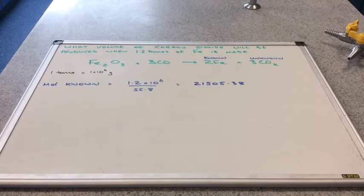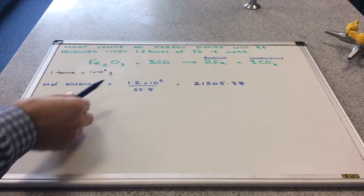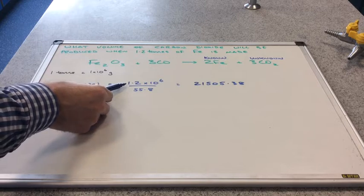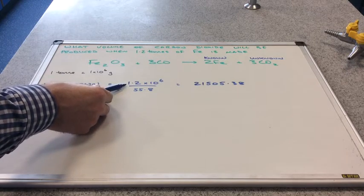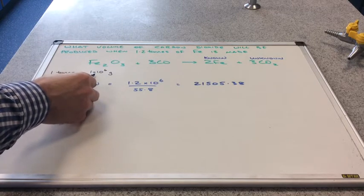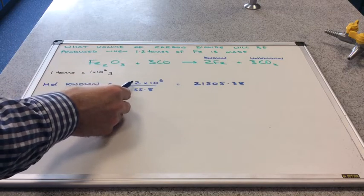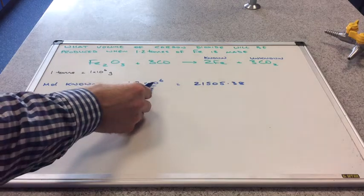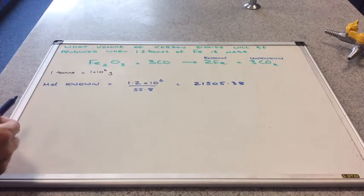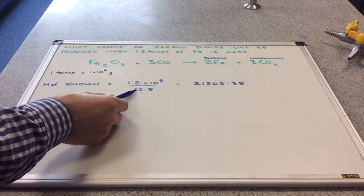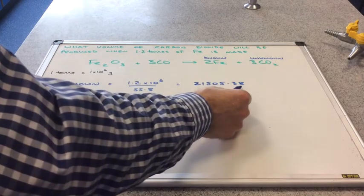So calculating the moles of known, the moles of iron. So we know that 1.2 tonnes have been produced. Remember that needs to be in grams. So we just bring in this conversion factor. So 1.2 tonnes is simply 1.2 times 10 to the 6 grams, divided by the MR of iron, gives us this many moles.